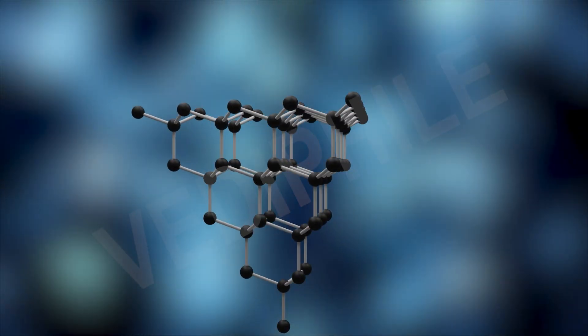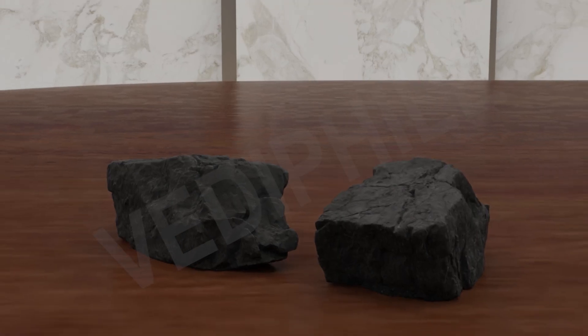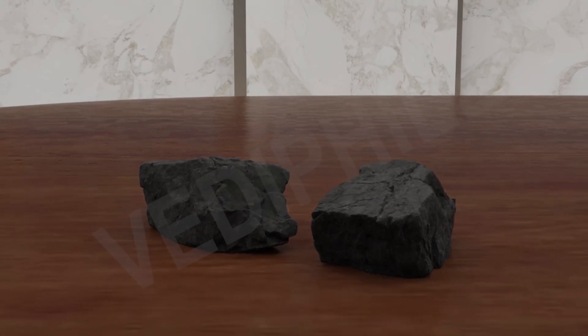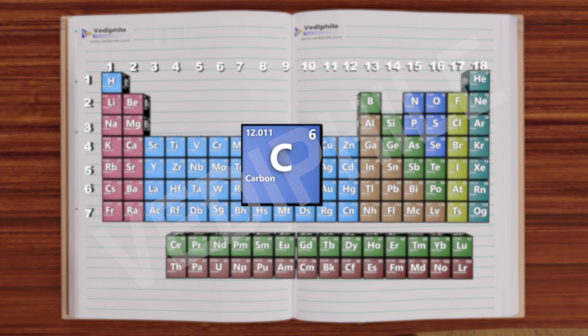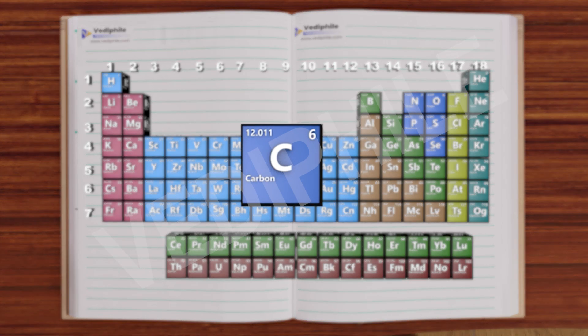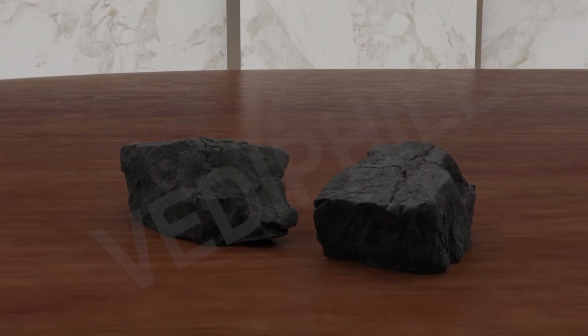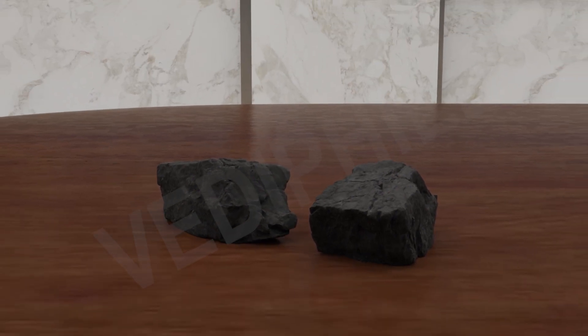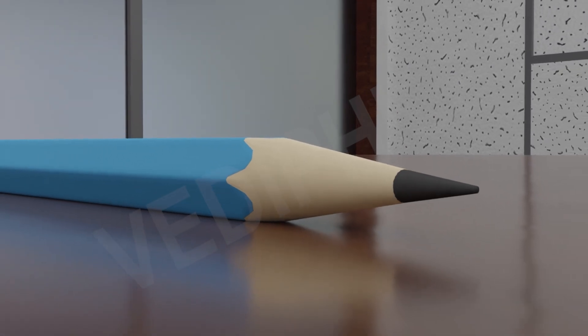Now let's have a look at the electronic configuration of carbon. What is the atomic number of carbon? Yes, it is 6. What is the distribution of electrons in various shells of carbon?